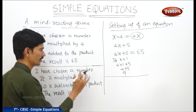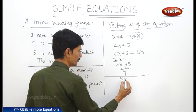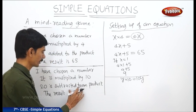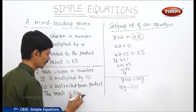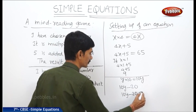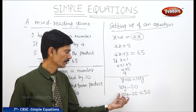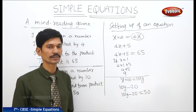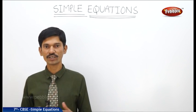Now for the second case, the unknown number is represented by y. It is multiplied by 10, so we get 10y. Since 20 is subtracted from the product, we get 10y minus 20. The result is 50, so we write: 10y minus 20 equals 50. We have to find the value of y for which this equation is satisfied.